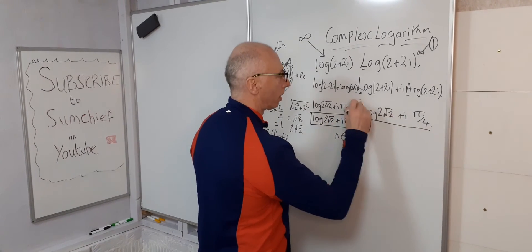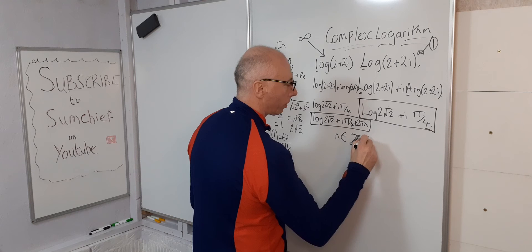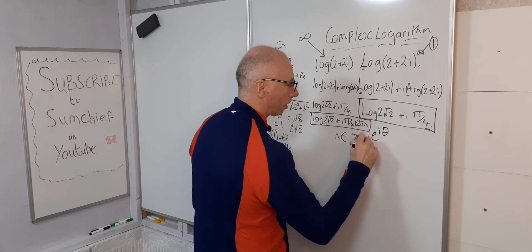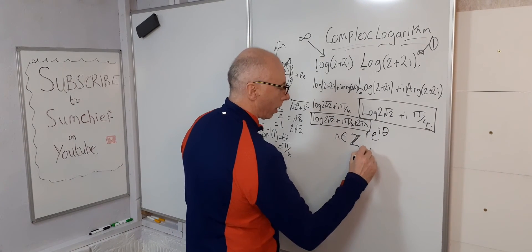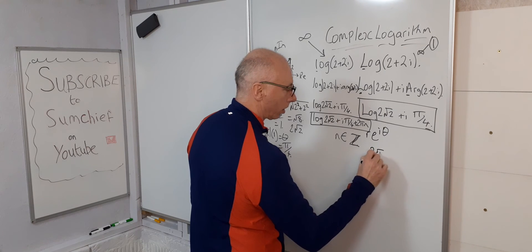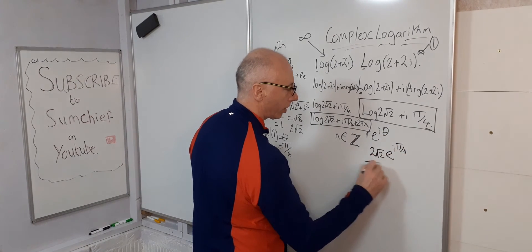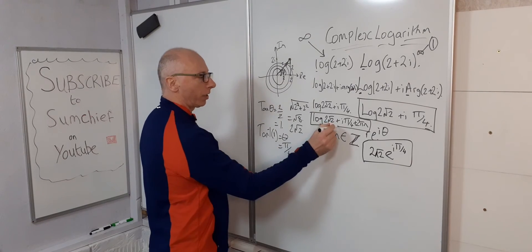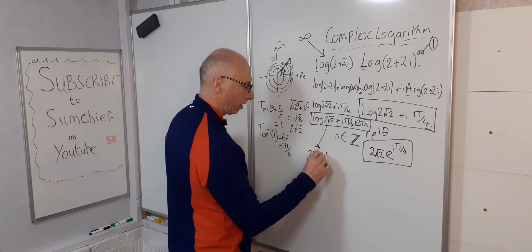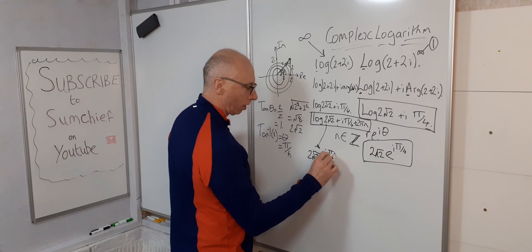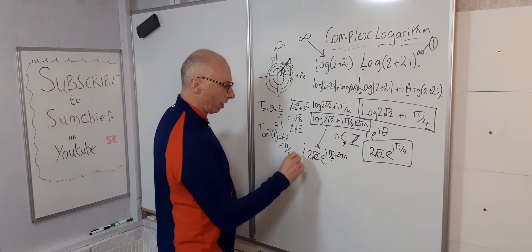This lowercase log has infinitely many solutions, while the capital Log has only one. We can also write both in Euler notation — that's r times e to the i·theta. The argument r is 2 root 2, so in polar form: 2 root 2 times e to the i·(pi/4) for the principal log, and 2 root 2 times e to the i·(pi/4 + 2pi·n) for the general log, where n is any integer.